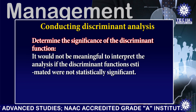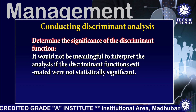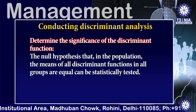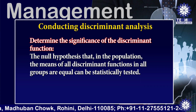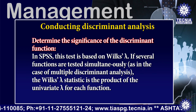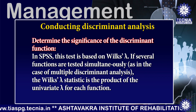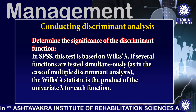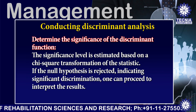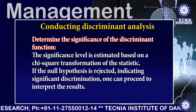Step 3 is to determine the significance of the discriminant function. It would not be meaningful to interpret the analysis if the discriminant functions were not statistically significant. The null hypothesis that the means of all discriminant functions in all groups are equal can be statistically tested. In SPSS, this test is based on Wilks' Lambda. If several functions are tested simultaneously, as in multiple discriminant analysis, the Wilks' Lambda statistic is the product of the univariate lambda for each function, and the significance level is estimated based on a chi-square transformation. If the null hypothesis is rejected, indicating significant discrimination, one can proceed to interpret the results.